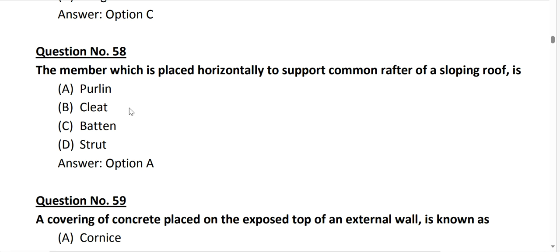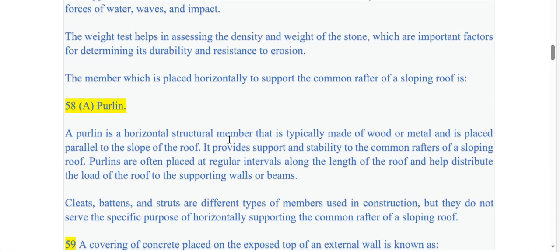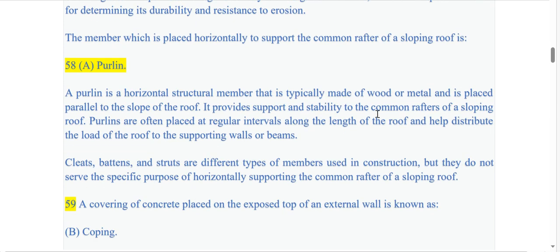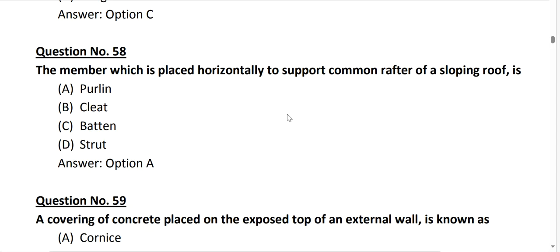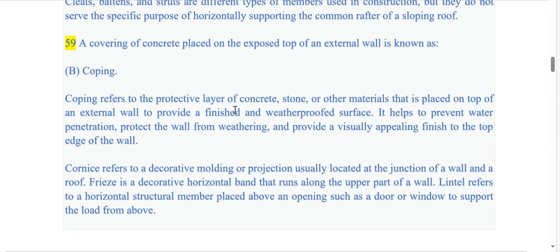Stone used in docks and harbors needs to be heavy and dense to withstand the force of water waves and impact. This helps in assessing the density and weight of the stone, which are important factors for determining durability and resistance against erosion. Next question number 58, the member which is placed horizontally to support common rafters of a sloping roof is known as purline. Option A is correct.